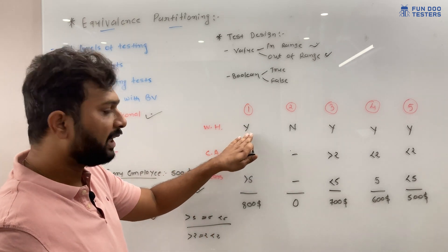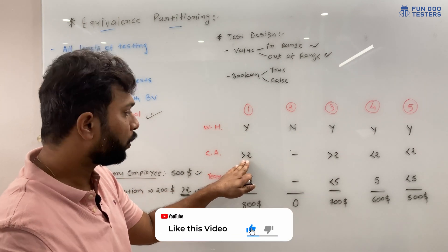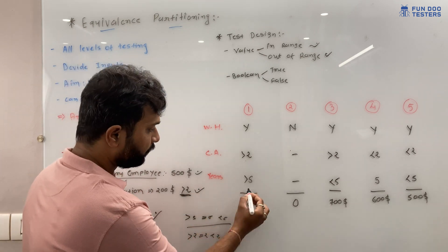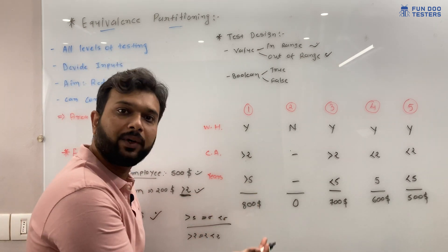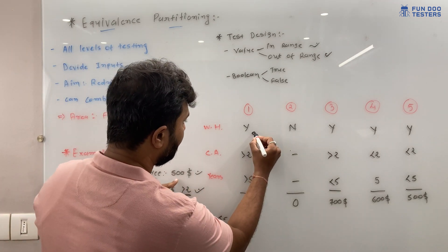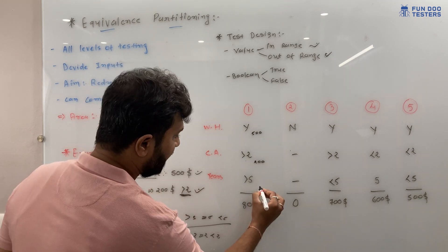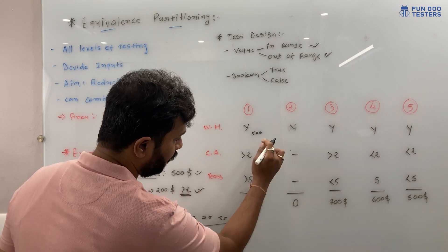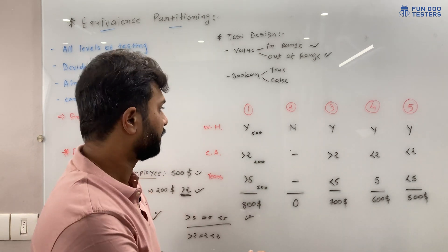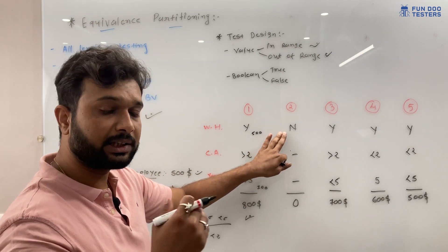Scenario 1: The employee is a current employee (true), has received more than two client appreciations, and has completed five years. In that case, they get $500 base bonus, $200 for client appreciation, and an additional $100 — totalling $800 as a yearly bonus.